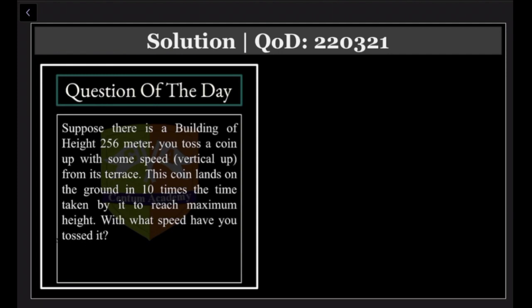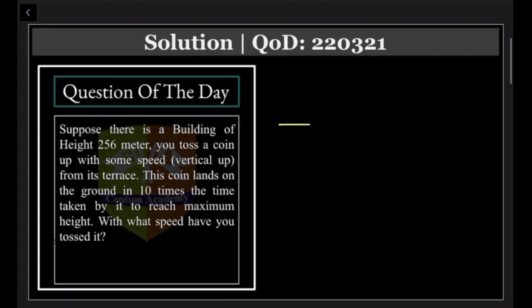I'll redraw the diagram. Here is the terrace. As you toss the coin, that coin will go to the maximum height and eventually will fall on ground. This distance is given to be 256 meter.